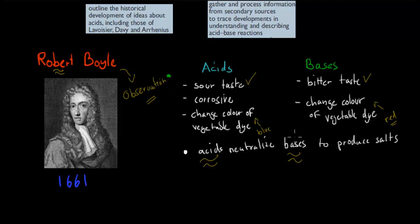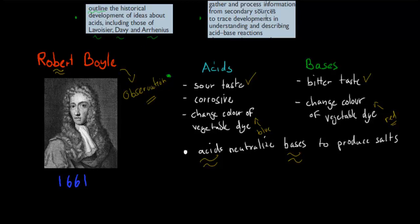What happened next is a couple of theories came about. This is actually in the syllabus dot point. I'm going to cover two dot points today in this video because they're closely related. The two dot points are: outline the historical development of ideas about acids including those of Lavoisier, Davy, and Arrhenius; and gather and process information from secondary sources to trace developments in understanding and describing acid-base reactions.